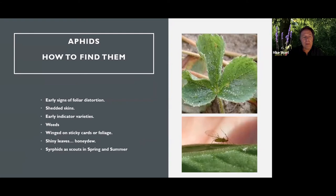Shedded skins, like in the picture above, indicate a pretty far-along infestation. They do shed their skins, and those white particles on the plant are not aphids — they're shed skin. This can come into play when you're using certain pesticides as well.